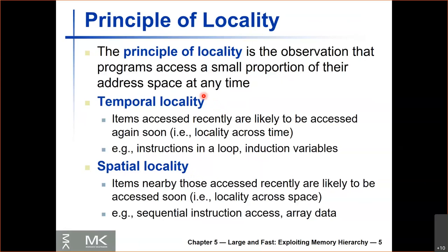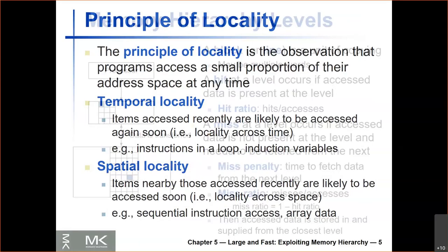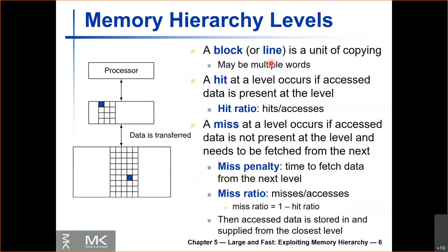We saw temporal locality last time but didn't see spatial locality, so today we're going to look at how we can also benefit from spatial locality. A block is the unit which we copy data across the memory hierarchy. A hit is when we find data in a specific level, and the hit ratio is the ratio of memory accesses that hit. A miss is when we don't find data in a specific level and have to go to the next level to get it. The miss penalty is the time it takes, and the miss ratio is the ratio of accesses that miss.